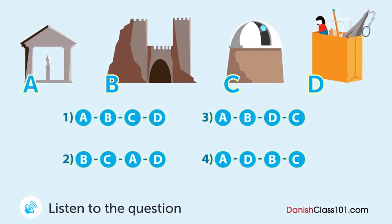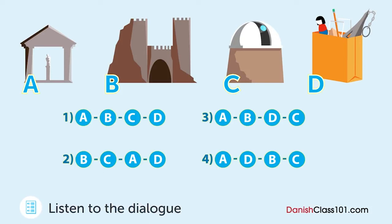En mand og en kvinde vil gerne planlægge deres sightseeing rute. I hvilken rækkefølge vil de gå rundt i byen? Hvilken rute skal vi tage i morgen? Jeg vil gerne se museet, slottet og observatoriet og købe souvenirer. Museet er åben fra 8 til 18, slottet fra 9 til 16, observatoriet fra 9 om morgenen til 9 om aftenen. Slottet har en særlig rundvisning to gange om dagen - ved middagstid og klokken to. Rundturen ved middag er allerede booket - vi booker den der starter klokken to. Vi spiser frokost fra restauranten inde i museet og køber souvenirs inden slotsrundturen starter. Jeg vil rigtig gerne se udsigten om aftenen - hvad hvis vi tager til observatoriet efter mørkets frembrud? God idé.